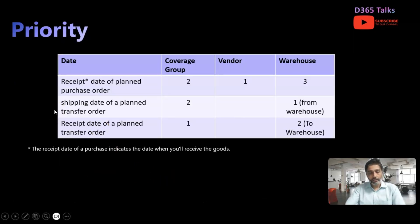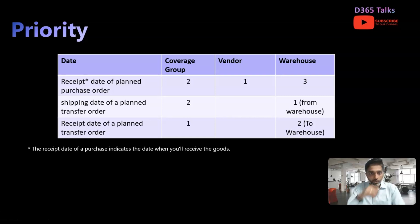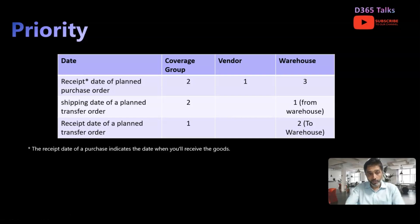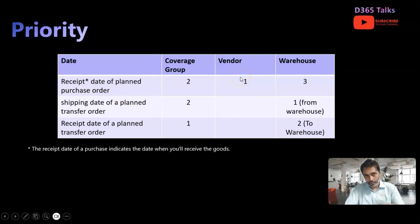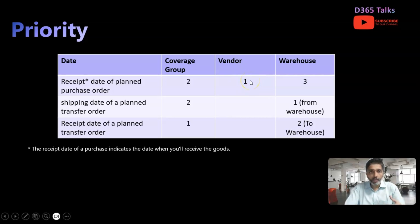Similarly we have customer calendars for understanding customer operating days, and resource calendars indicating when a resource is available to meet capacity. For more detail on resource calendars, check out the discrete manufacturing playlist already published. Now the most important slide is understanding the priority. When master planning generates the receipt date for planned purchase orders, the system first checks the vendor calendar — the vendor standard operating days — as priority number one.